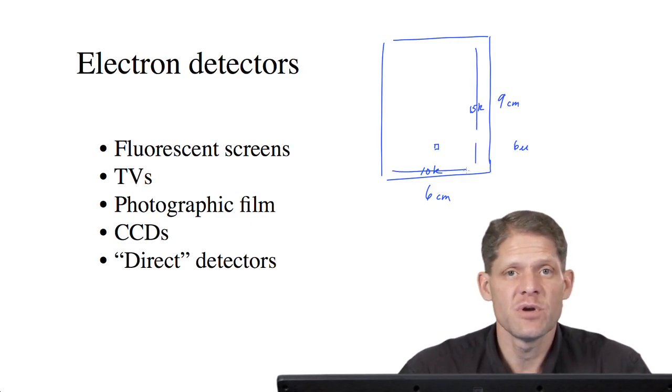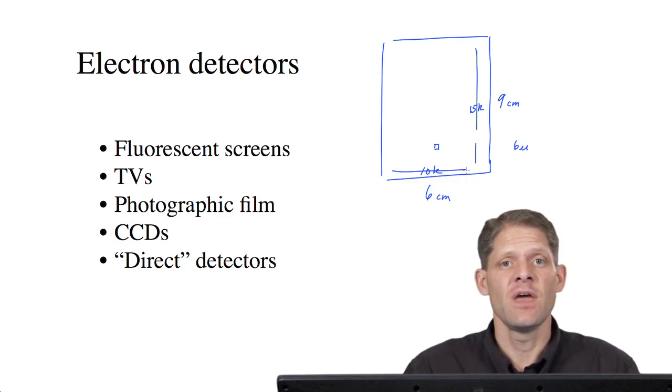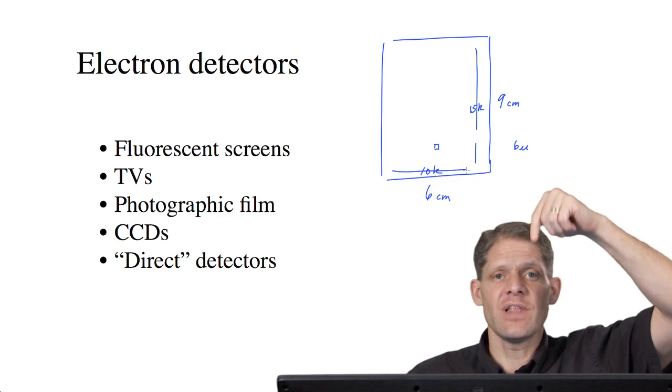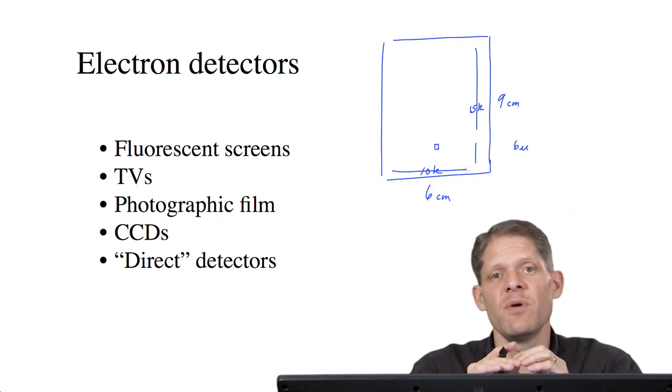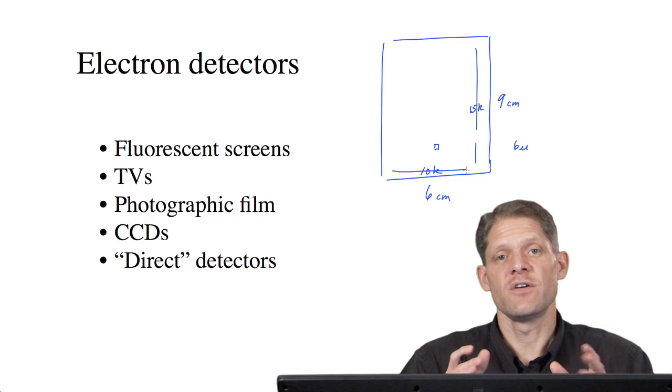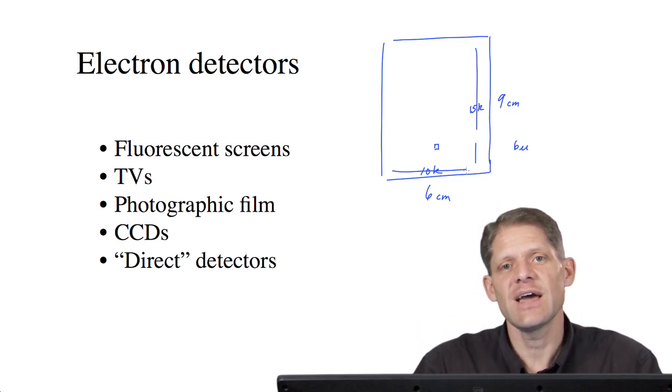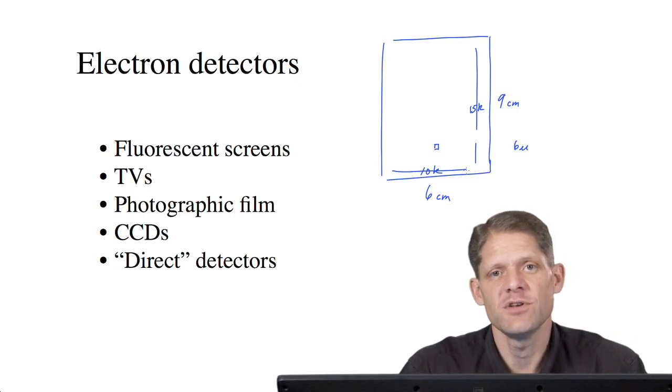Film allows you to record very large images, and they're also high resolution, because the interaction of the electrons with the grains in the film are very localized. There is also a dose regime where film has a very nice linear response to the dose.